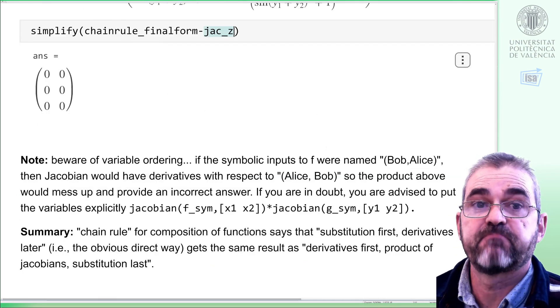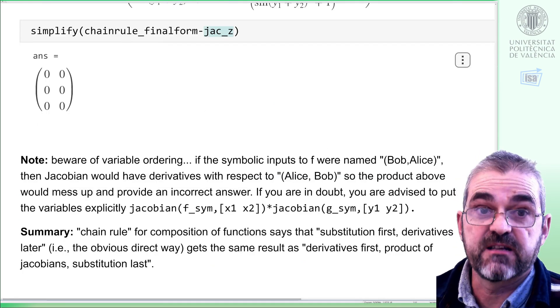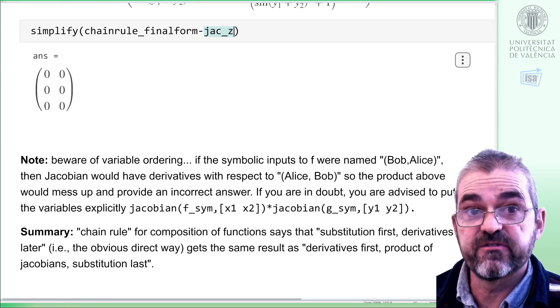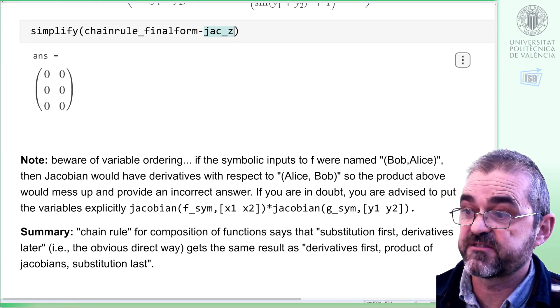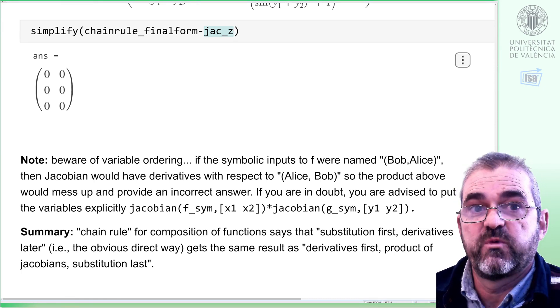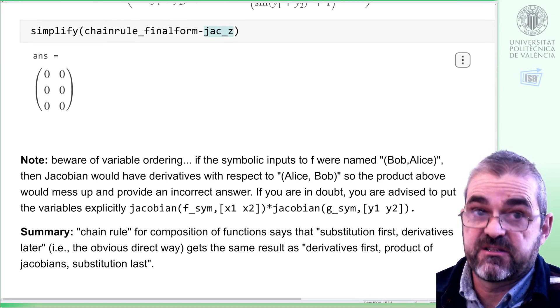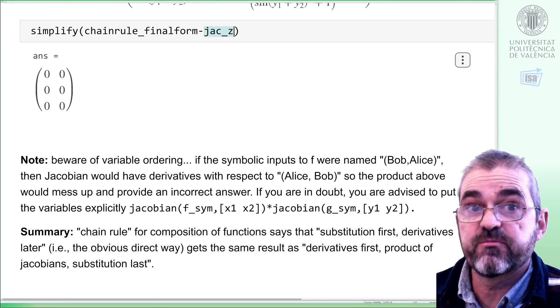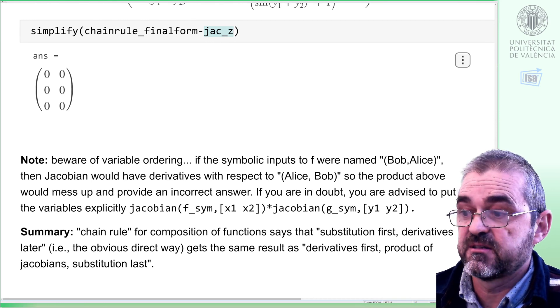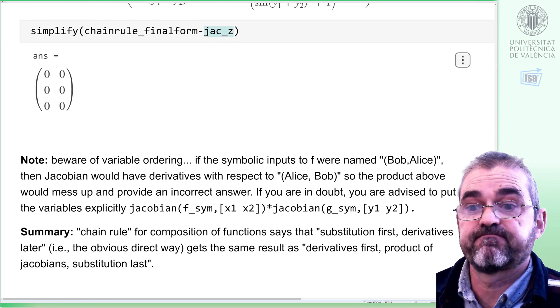In summary, this MATLAB code has checked that substitution first and partial derivatives later, so the direct way, we did first, the Jacobian of z, gets the same result as chain rule, derivatives first, product of Jacobians second, and substitution last.